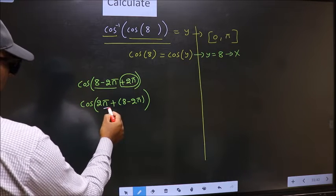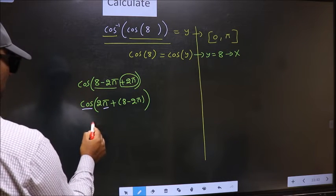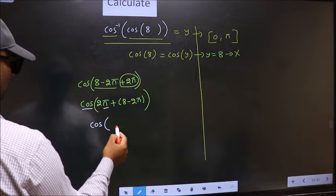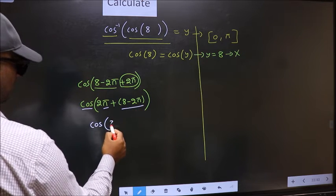Here we have π. So cos is not going to change. It will remain cos. And inside we get this angle.